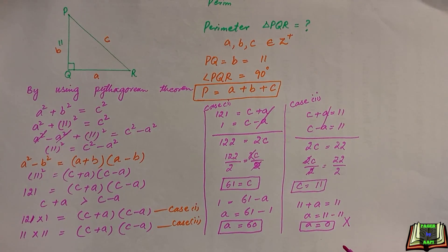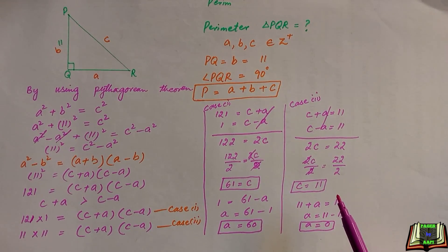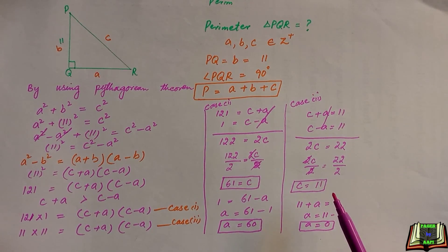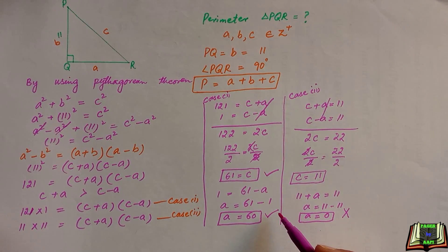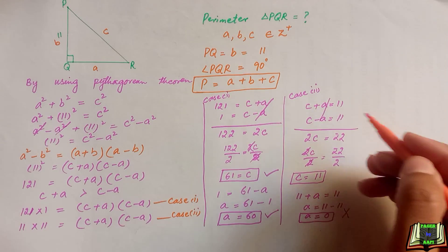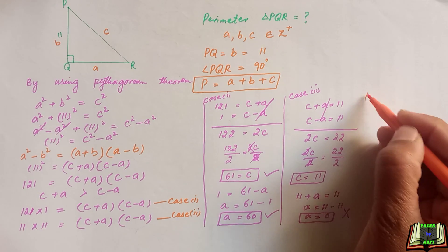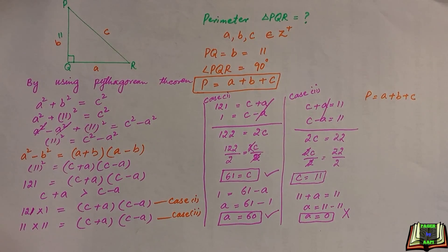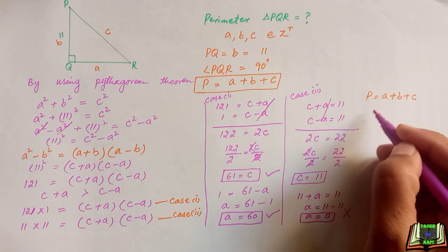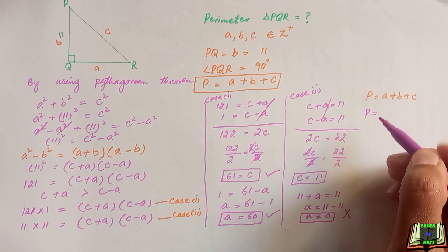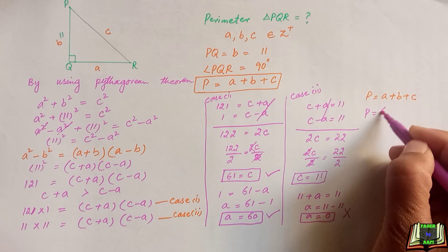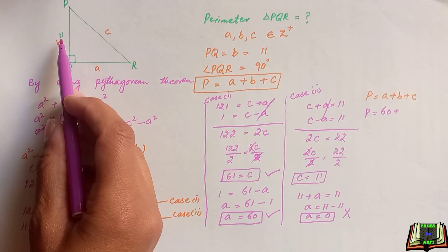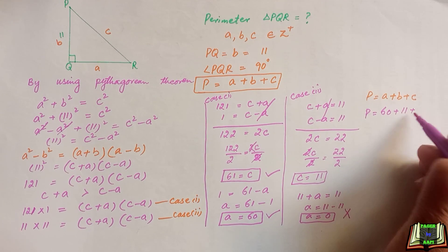So we are going to neglect Case 2 because the value of A cannot be 0. By Case 1 we got the values of the other two sides: side C equals 61 and side A equals 60. So we have to find out the perimeter, and we are going to use these values of A, B, and C in the formula: perimeter P equals A plus B plus C.